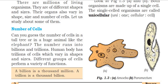The human body has trillions of cells, which vary in shapes and sizes. In the human body there are trillions of cells, all in different shapes and sizes. Different groups of cells perform a variety of functions, and large numbers of cells combine to perform different functions.